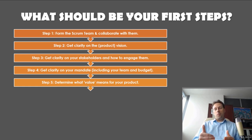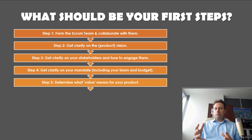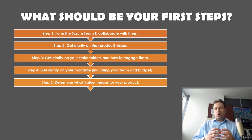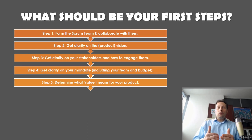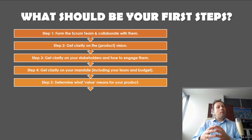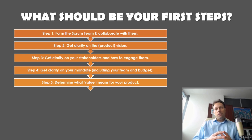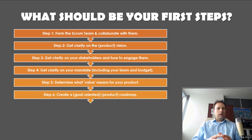Step five: determine what value means for your product. How to define and measure value is context dependent — it may differ depending on your product type, product life cycle phase, and more. Define together with your most important stakeholders what is valuable for the product, for your customers, and for the process you are supporting. Based on how you define value, you can also decide how to measure it. Remember: what value means for your product is both context dependent and time dependent — it may change over time.